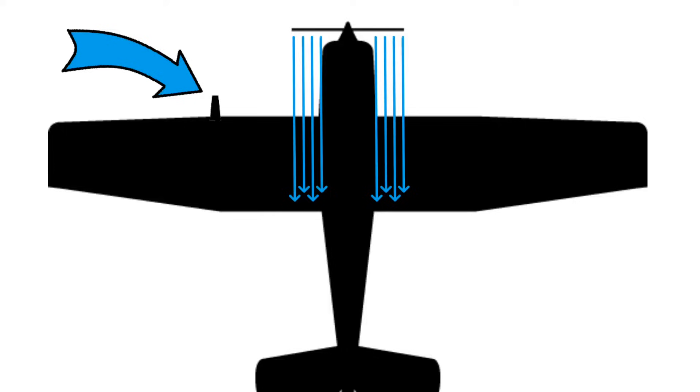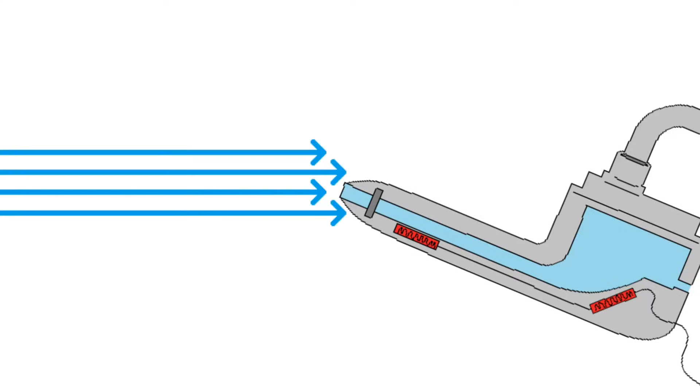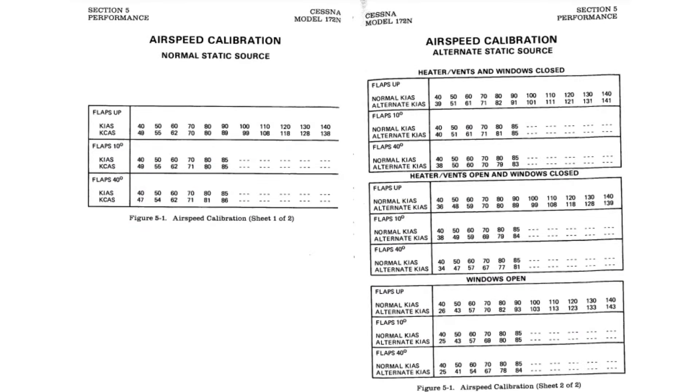And that's the angle of the pitot tube in relation to the relative wind. High angles of attack and different airplane configurations can affect the accuracy of your airspeed indicator. And that's because weird angles can make it difficult for the ram air to enter the pitot tube. Every airplane is different, but every airplane has some kind of error caused by this. And the manufacturers account for this by putting a chart in the POH. This is what we call calibrated airspeed once you make these corrections using these charts.